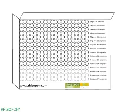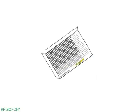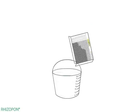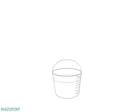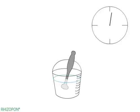Count the Rhizopon tablets. Put the tablets into the bucket of water and stir the solution about 1 minute or until the tablets fully dissolve. An electric hand blender is one way to stir the rooting solution.